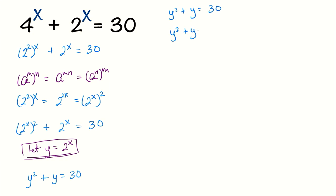Subtract 30 on both sides, and what we get is a quadratic equation. We can factor this. We need two numbers that add up to positive 1 and when multiplied equal negative 30.